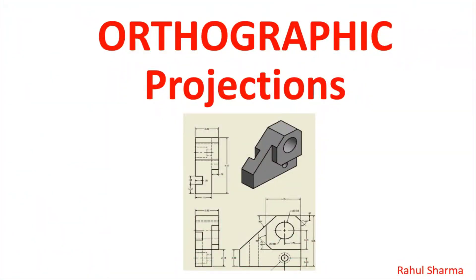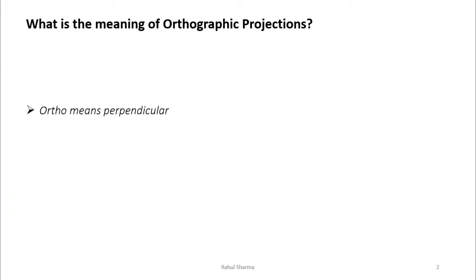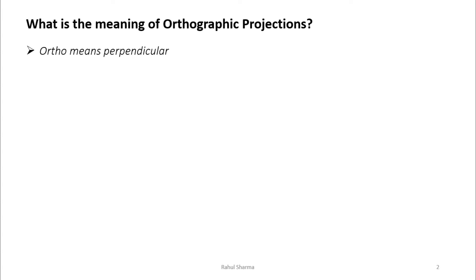We will start the new topic: orthographic projection. Orthographic projection means a perpendicular view. The word 'ortho' represents perpendicular — when you solve mathematical problems where two lines are perpendicular to each other, they are ortho to each other.